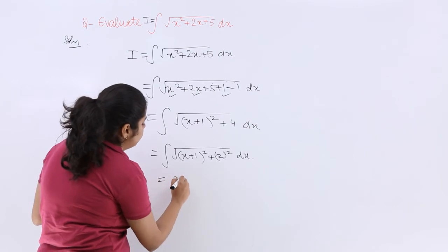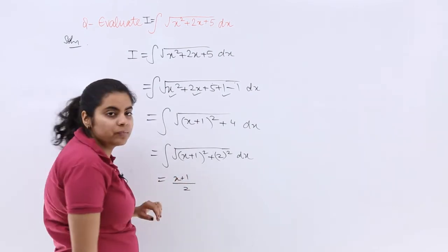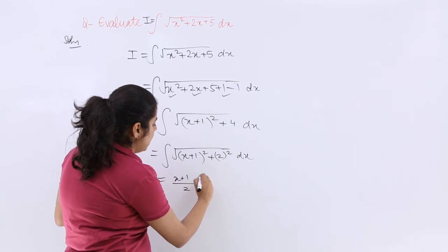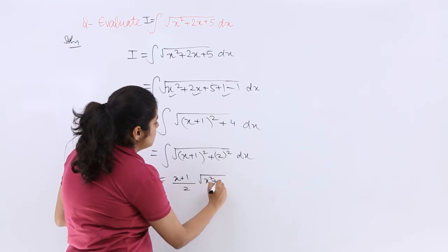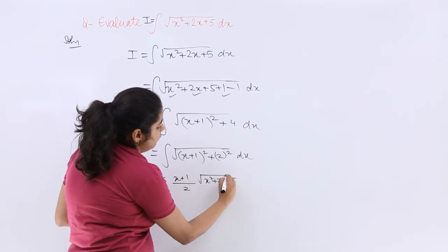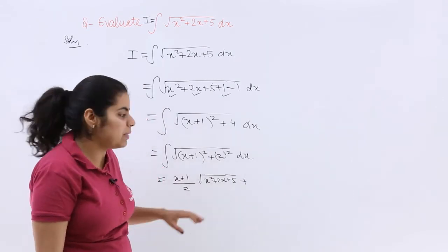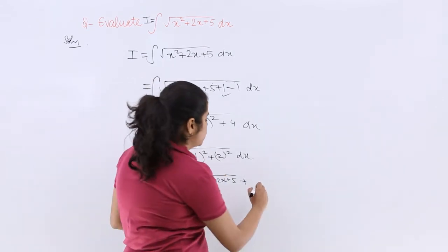So it is x/2, meaning (x + 1)/2, times the square root of (x² + a²), which is the question itself, plus a²/2, meaning 4/2, which is 2.